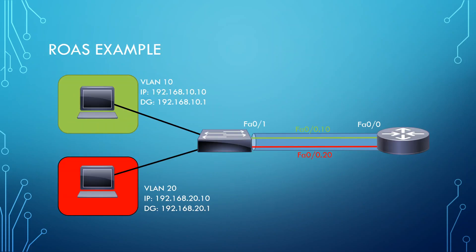So we have a single physical connection between our switch and our router, configured as a trunk link from the switch end. From the router end, the way we configure sub-interfaces is by typing in the physical interface we want to logically divide — in this case FA0/0 — followed by a dot and then the sub-interface number. It's important to know that the sub-interface number does not have to match the VLAN number. For example, I've configured sub-interface FA0/0.10 for VLAN 10, but I could have configured it as FA0/0.100 and it could still be the sub-interface for VLAN 10 — there's a separate command to actually assign the sub-interface to a VLAN.